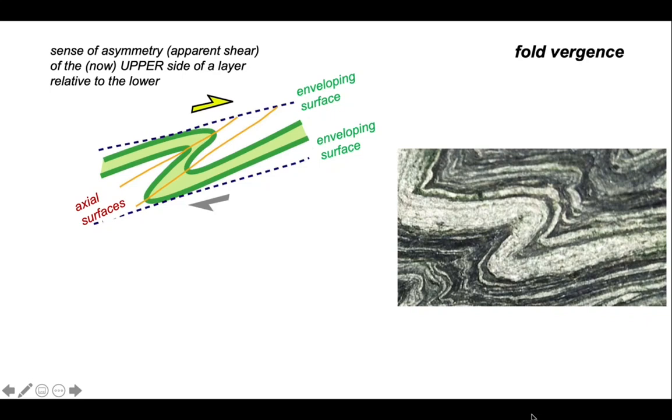The relationship between the trend of axial surfaces, shown by those gold lines, with respect to the enveloping surface of the folds, is asymmetric. That sense of asymmetry is the same as if the enveloping surface was bedding and the axial surface was cleavage. We can take the same relationships as we do for cleavage and bedding.